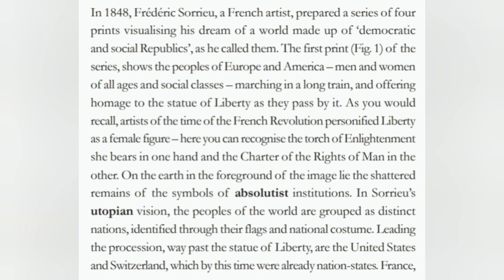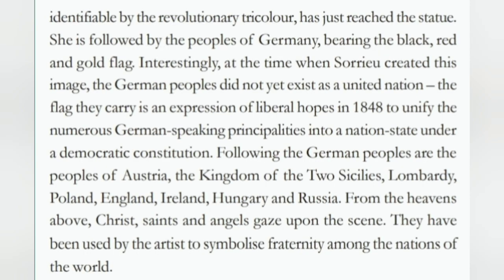In Sorrieu's utopian vision, the peoples of the world are grouped as distinct nations, identified through their flags and national costume, leading the procession past the statue of Liberty are the United States and Switzerland, which by this time were already nation-states. France, identifiable by the revolutionary tricolor, had just reached the statue. She is followed by the peoples of Germany bearing the black, red, and gold flag. Interestingly, at the time when Sorrieu created this image, the German peoples did not yet exist as a united nation.